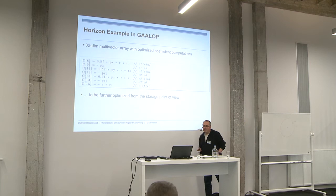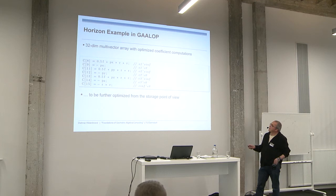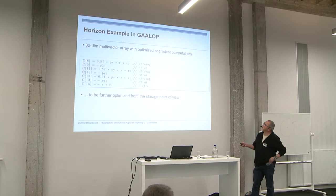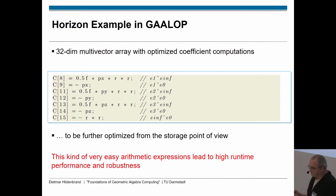What we can see is there are only very simple computations left at the end. We had a somehow complicated algorithm with outer products, inner products, and so on. But at the end, with GALOP, we only have very simple sums of products — and that's it. This way of optimizing leads to high runtime performance and robustness.